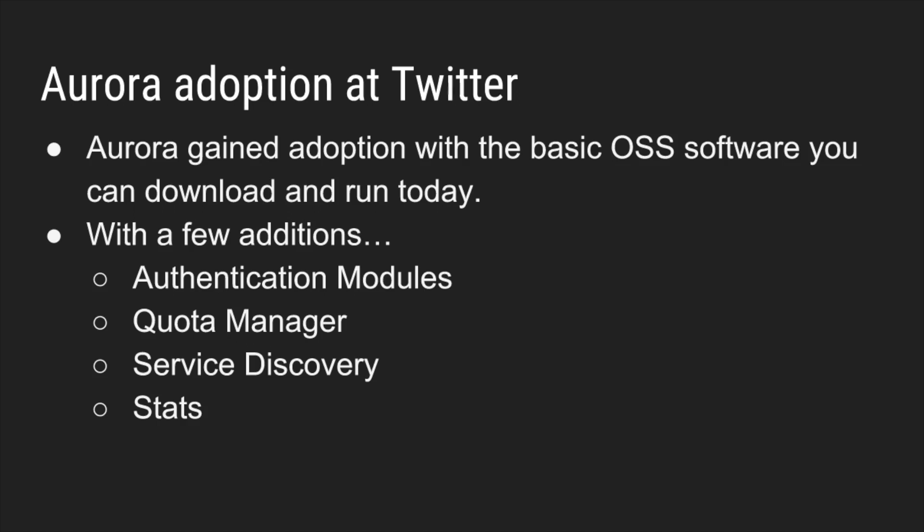One thing about Aurora adoption at Twitter is you can go and download Mesos and Aurora on the Apache website today and it would be fairly similar to what we offered engineers when Aurora gained widespread adoption and replaced physical hardware. The only thing we had to add was authentication so we could protect different services and access controls. We also added the quota manager, which is kind of the building block for a chargeback system. The quota manager is basically a way of saying here is a guaranteed resource that cannot be preempted — that's a crucial element of how we have almost free resources for development that get preempted when something really important needs to run.